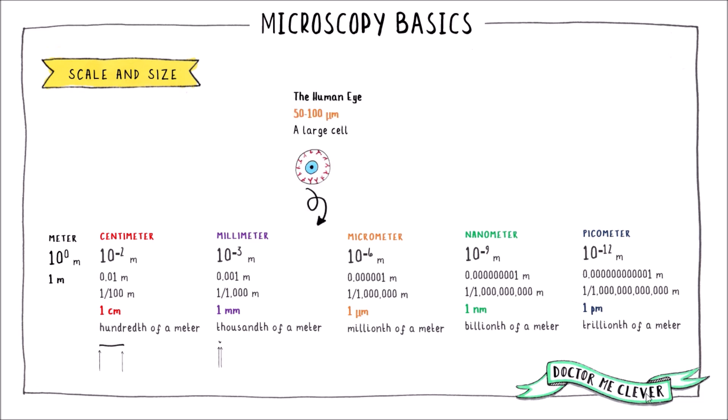The human eye can see things that are approximately 50 to 100 micrometres in length or larger, and you might be able to see a large cell if you look very very closely. However, the best light microscopes have the ability to distinguish between two points that are only 200 nanometres apart and magnify an image up to 2000 times.